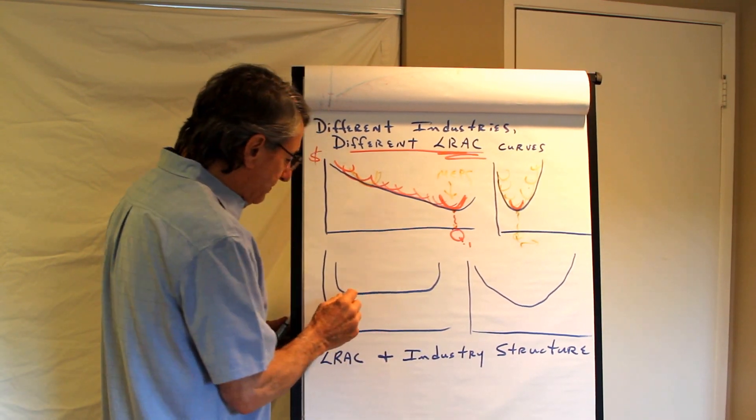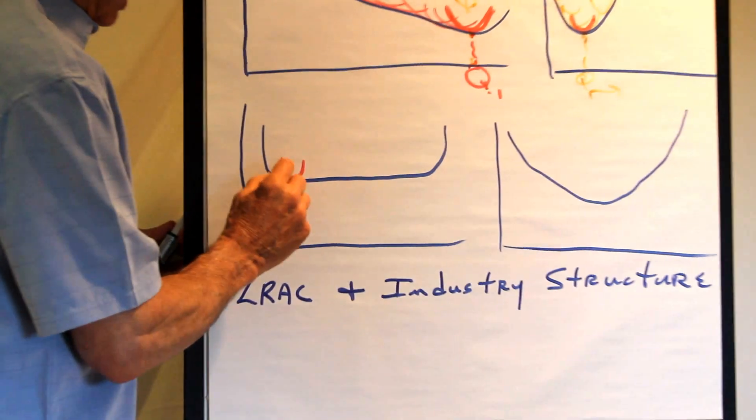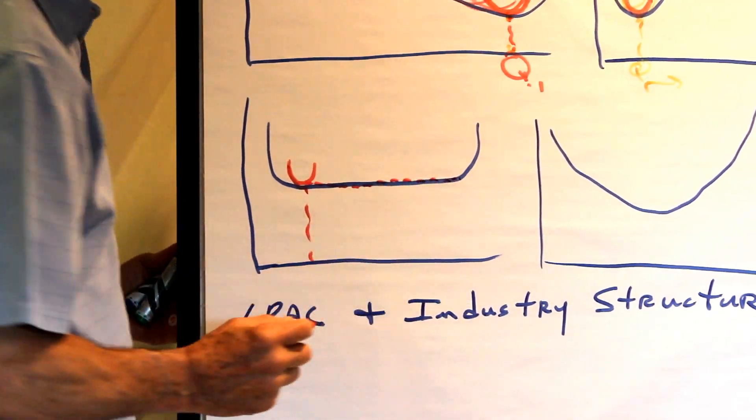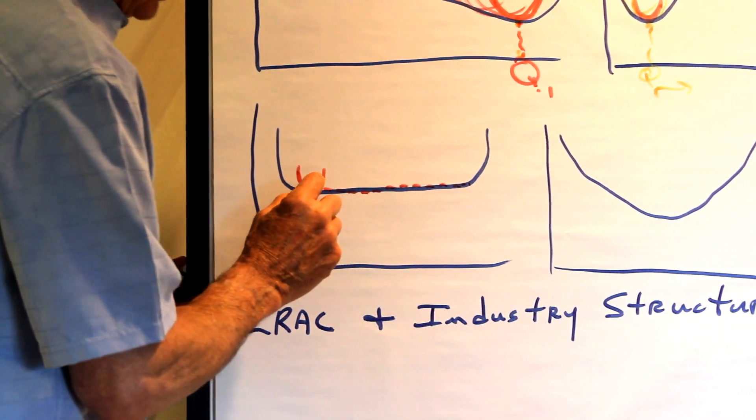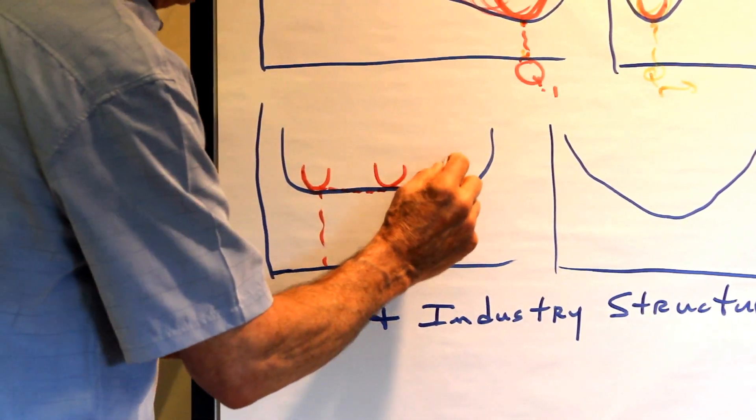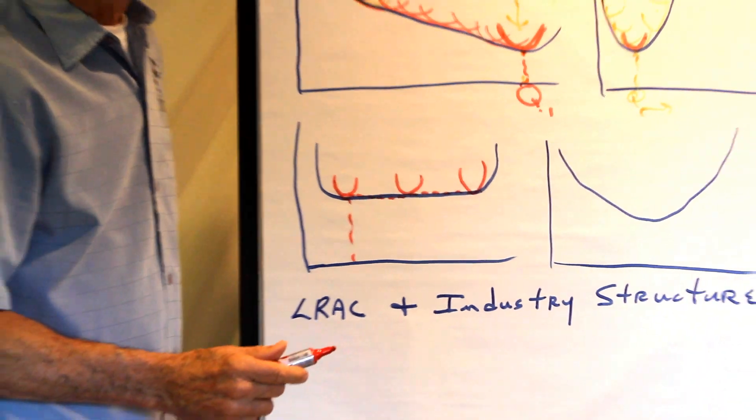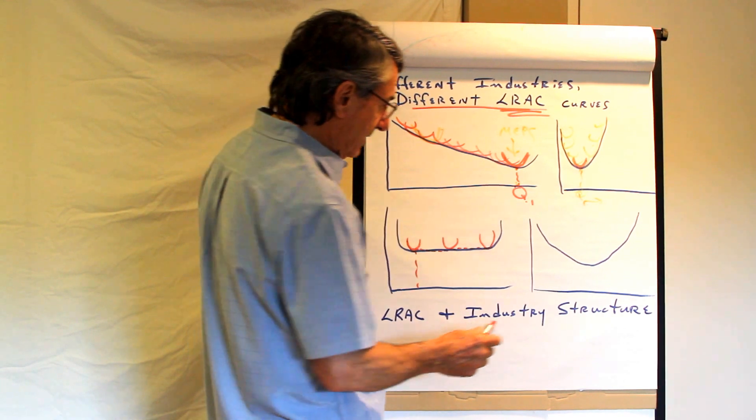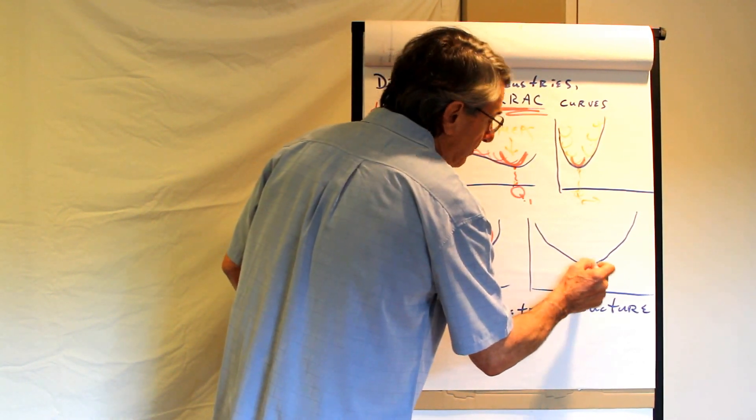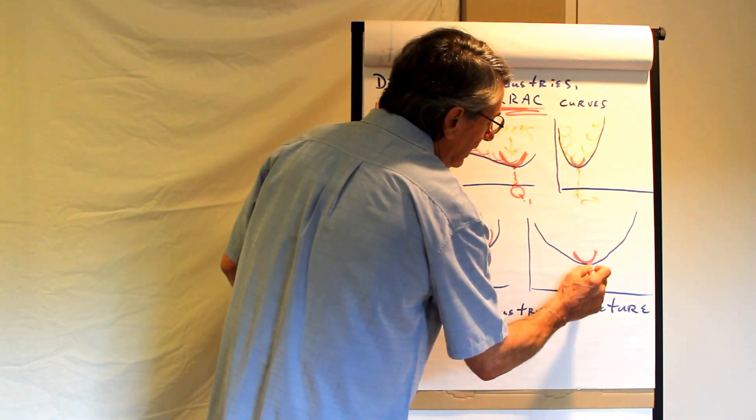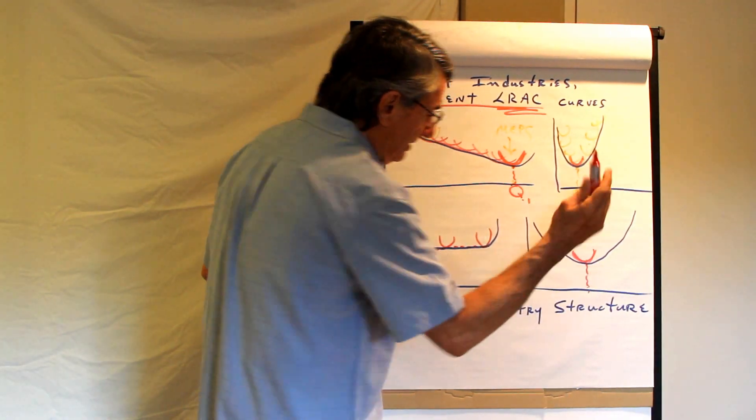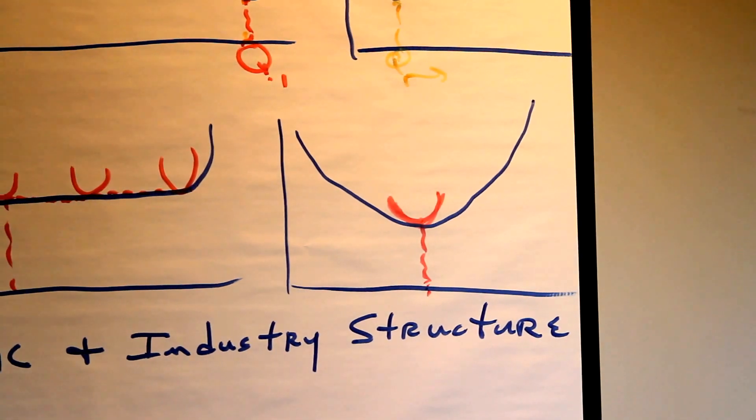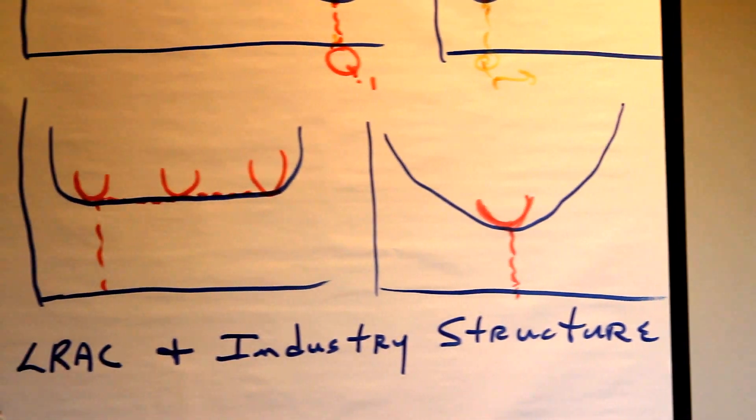Then this one is possible as well, where the minimum efficient plant scale is fairly small. And then there's extensive constant returns to scale. So if you're a small scale firm, a medium scale firm, or a large scale firm you all have a similar cost footing and one cannot chase the other out of the market. The other possibility, of course, is the medium one where the minimum efficient plant scale is a medium-sized firm. So in this industry you're likely to see a fairly large number of medium-sized firms.